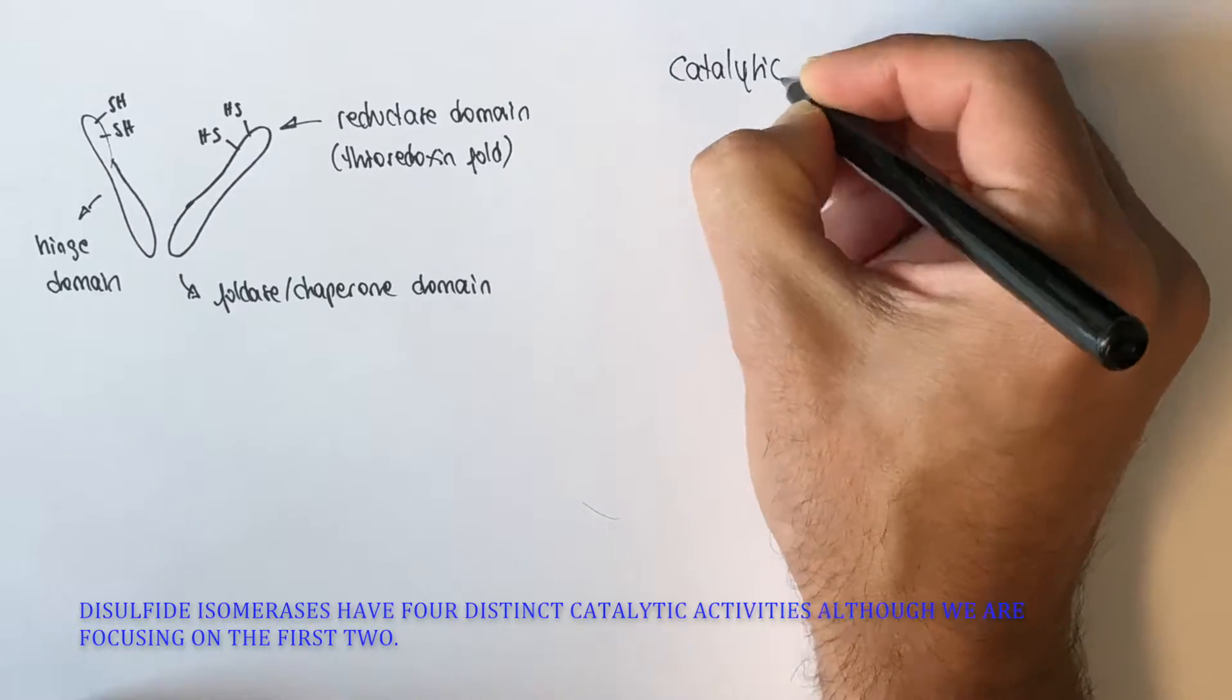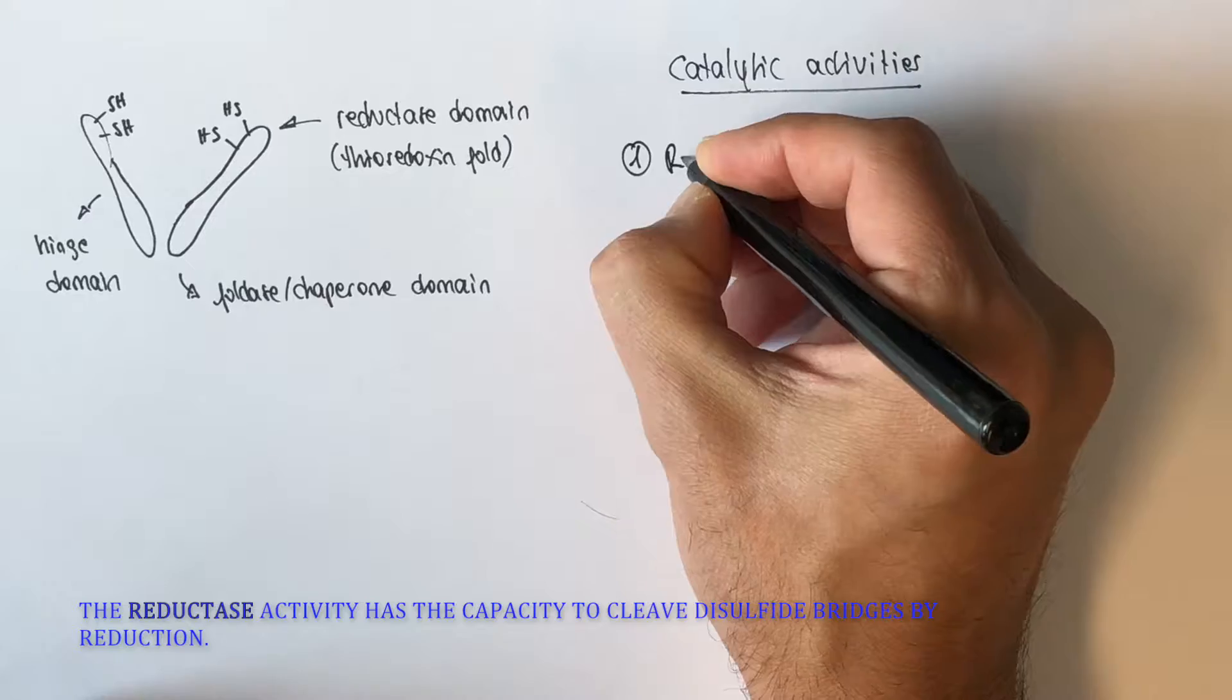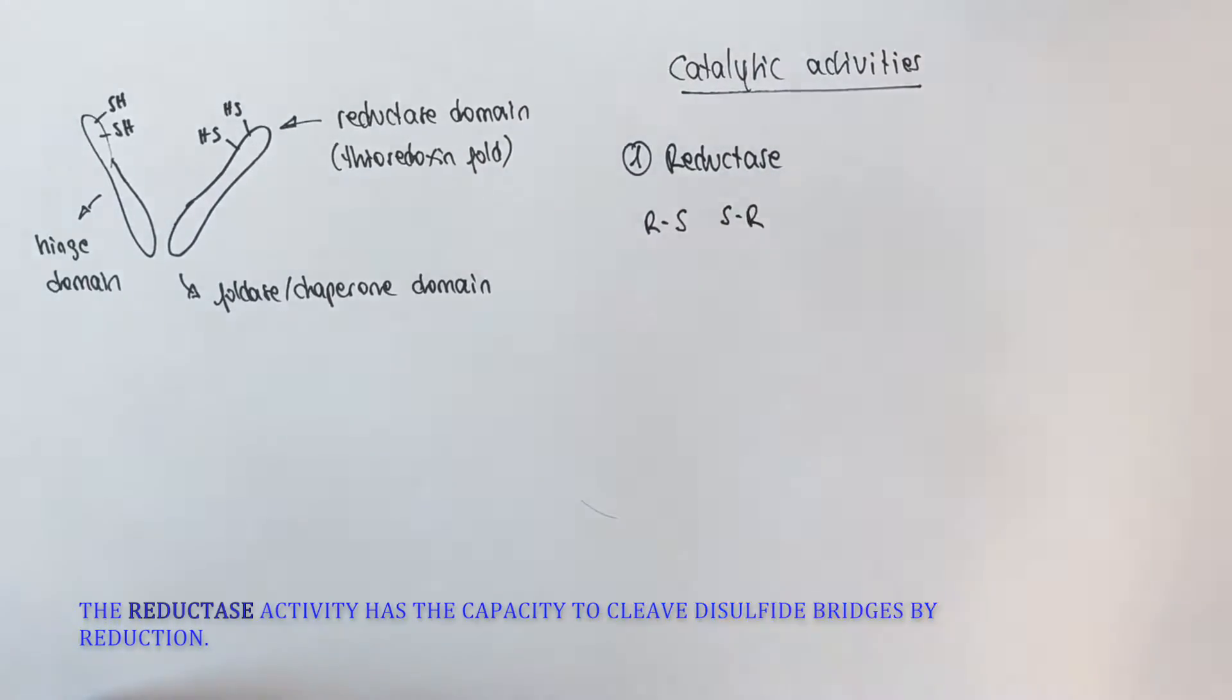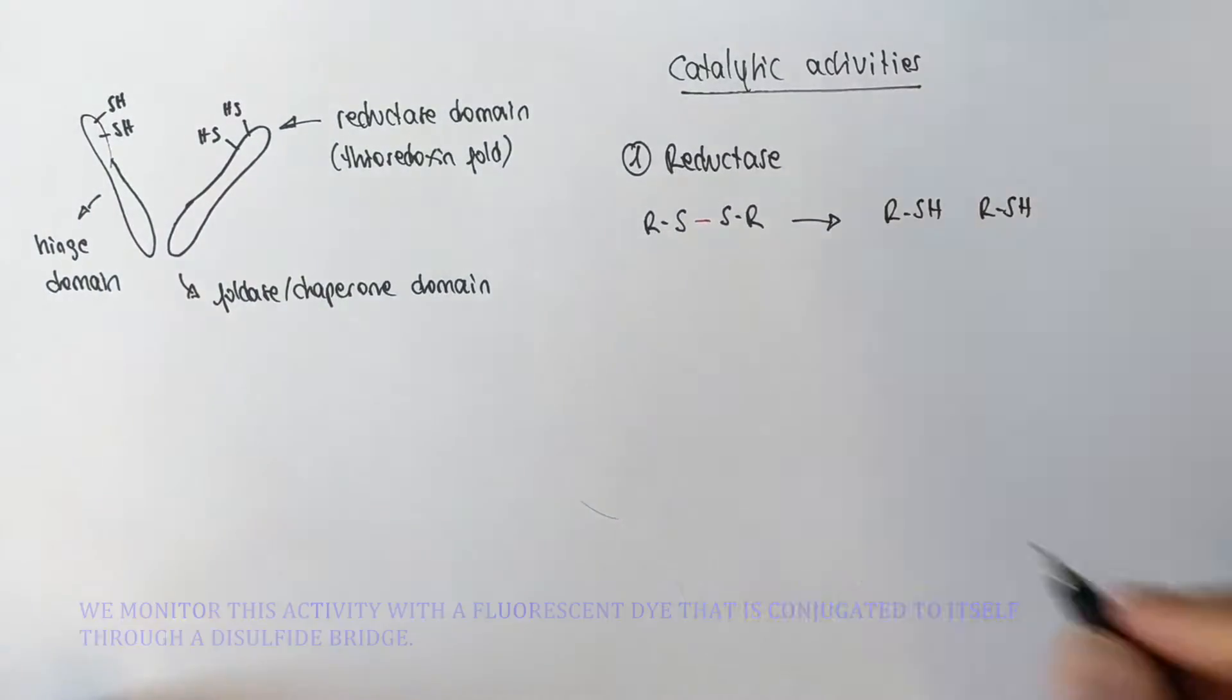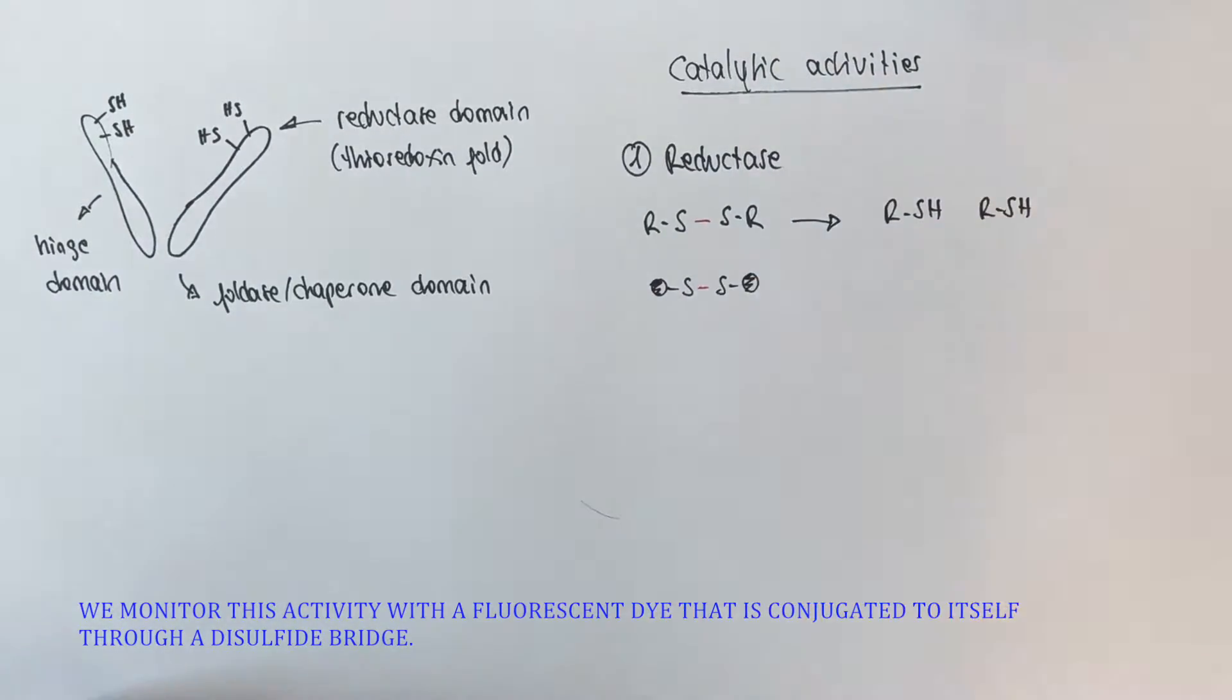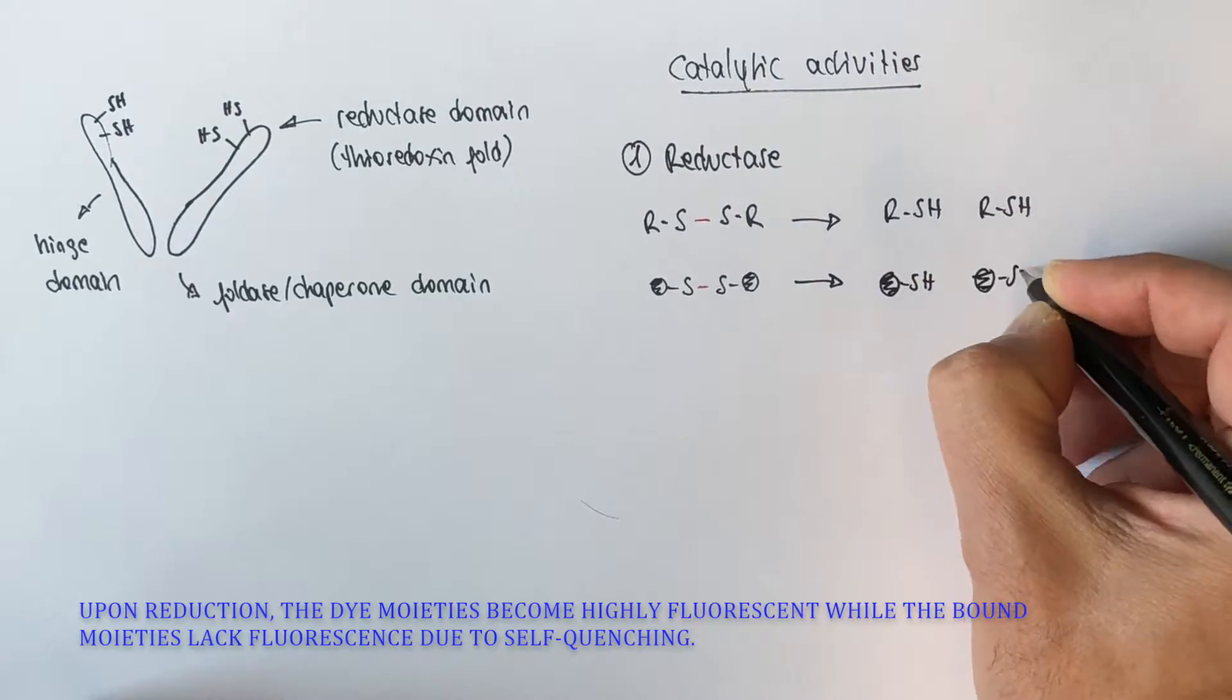Disulfide isomerases have four distinct catalytic activities, although we are mostly screening two of them. The reductase activity is the capacity for cleaving disulfide bridges by reduction. We monitor this activity with a fluorescence dye that is conjugated to itself through a disulfide bridge. The dye moieties do not fluoresce due to self-quenching. Upon reduction of the thiol groups, the dye becomes highly fluorescent.